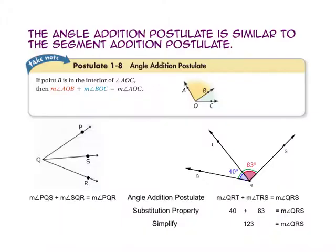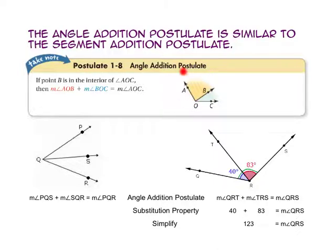The angle addition postulate is very similar to the segment addition postulate. It says if point B is on the interior of angle AOC, then the measure of angle AOB plus the measure of angle BOC will equal the entire measure of angle AOC.